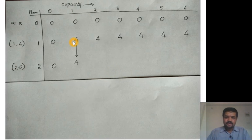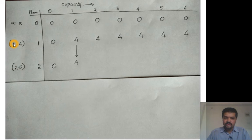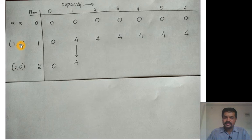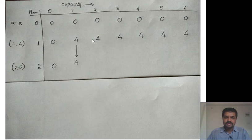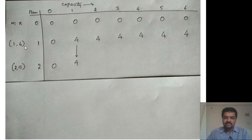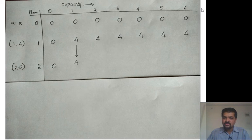Starting with f(1, 1): only the first item is allowed and knapsack capacity is 1. The first item has weight 1, so we can choose it, giving a value of 4. As we increase the knapsack capacity from 1 to 6, because we only have one item of this type, the value remains 4 throughout the entire first row.